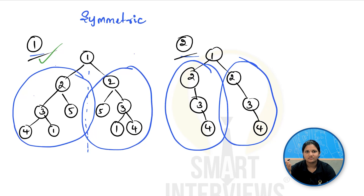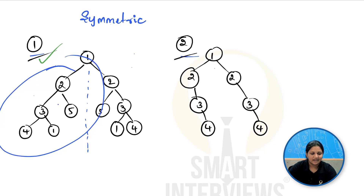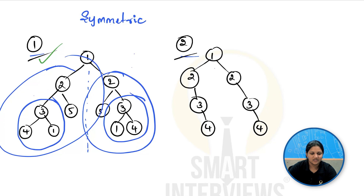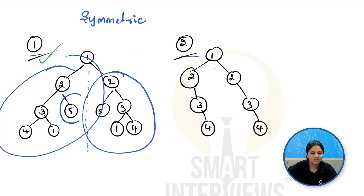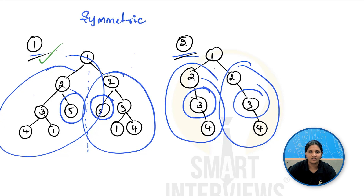You all know what a mirror image is. For the first tree, for node 2 the left subtree becomes the right subtree of the mirrored 2, and vice versa. But for the second tree, 3 is on the right side of one 2, and 3 is also on the right side of the other 2 — that is not a mirror image. So we say it is not a symmetric tree.